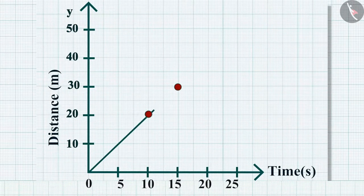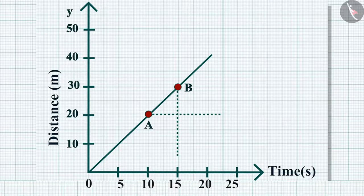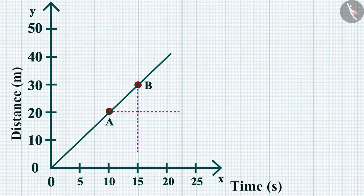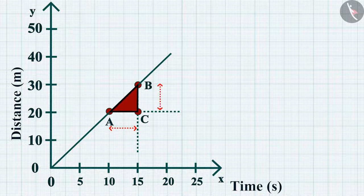Choose two points A and B on the graph. Draw a line parallel to the x-axis from point A, and another line parallel to the y-axis from point B. These two lines meet each other at point C, forming triangle ABC. On the graph, AC denotes the time interval while BC corresponds to the distance.